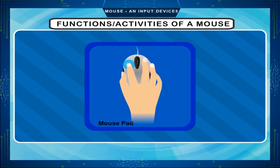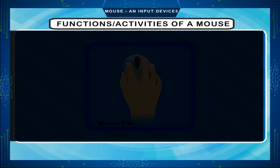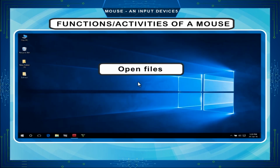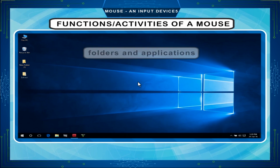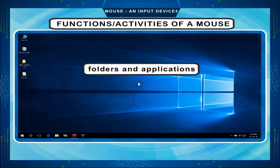Double click. Pressing the left mouse button twice without any interval is called double click. This is used to open files, folders, and applications.